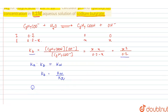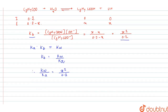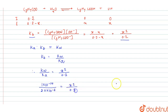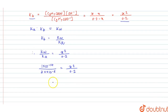Comparing the two equations: Kw / Ka = x² / 0.2. Kw = 1 × 10⁻¹⁴ and Ka = 2.0 × 10⁻⁵, so: 1 × 10⁻¹⁴ / (2.0 × 10⁻⁵) = x² / 0.2.